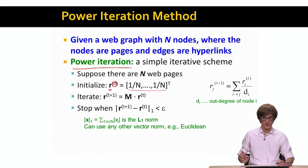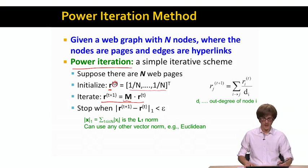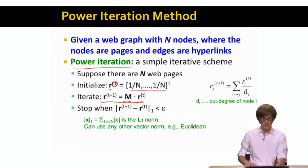So now all we do is we iterate our recursive equation. We say that values of r at time t plus 1 is the matrix M — that's the stochastic adjacency matrix — times our previous vector r at time t. And we keep iterating this r equals M times r.